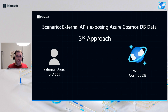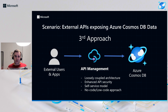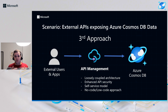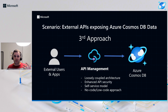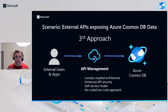The third approach — which our demo is based on — is leveraging API Management, a service available on Azure. The idea is to use API Management as an API gateway to abstract your external users and apps from your backend, which is Azure Cosmos DB. This enables a loosely coupled architecture, enhanced API security via existing policies and templates, a self-service model through a developer portal where users can browse, try, and subscribe to APIs, and a no-code or low-code approach to accelerate development.